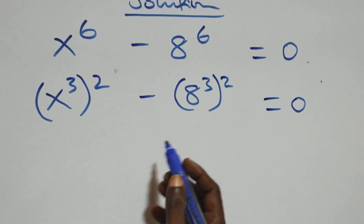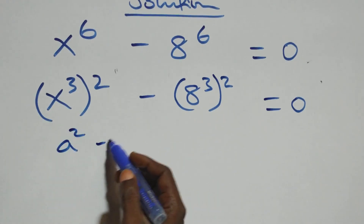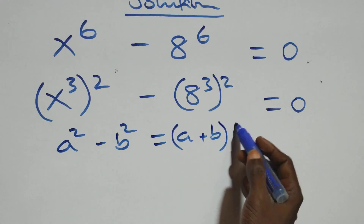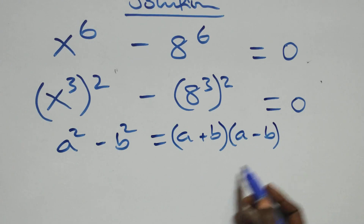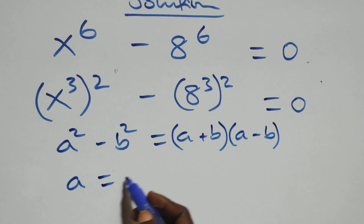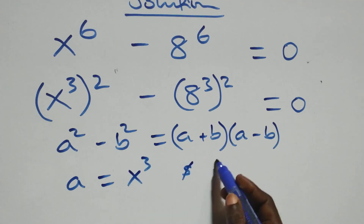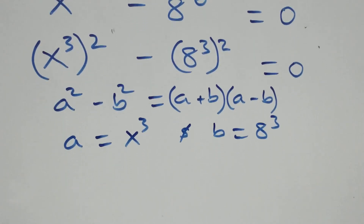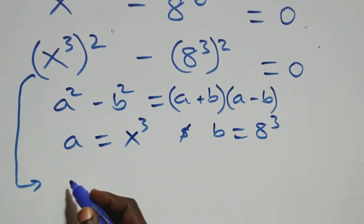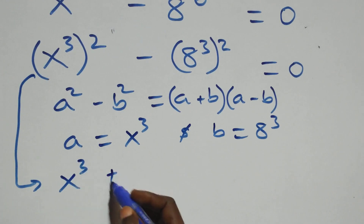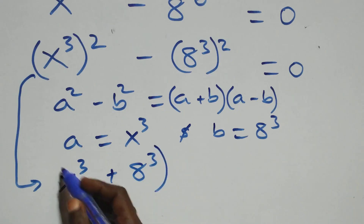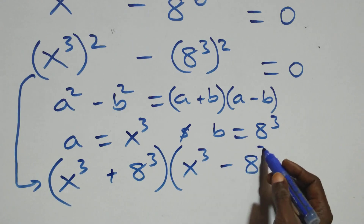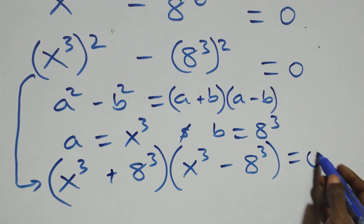The next step: when we have a squared minus b squared, this factors as (a + b)(a - b). Here, a stands as x raised to the power 3 and b stands as 8 raised to the power 3. So this becomes (x³ + 8³)(x³ - 8³) equals to 0.